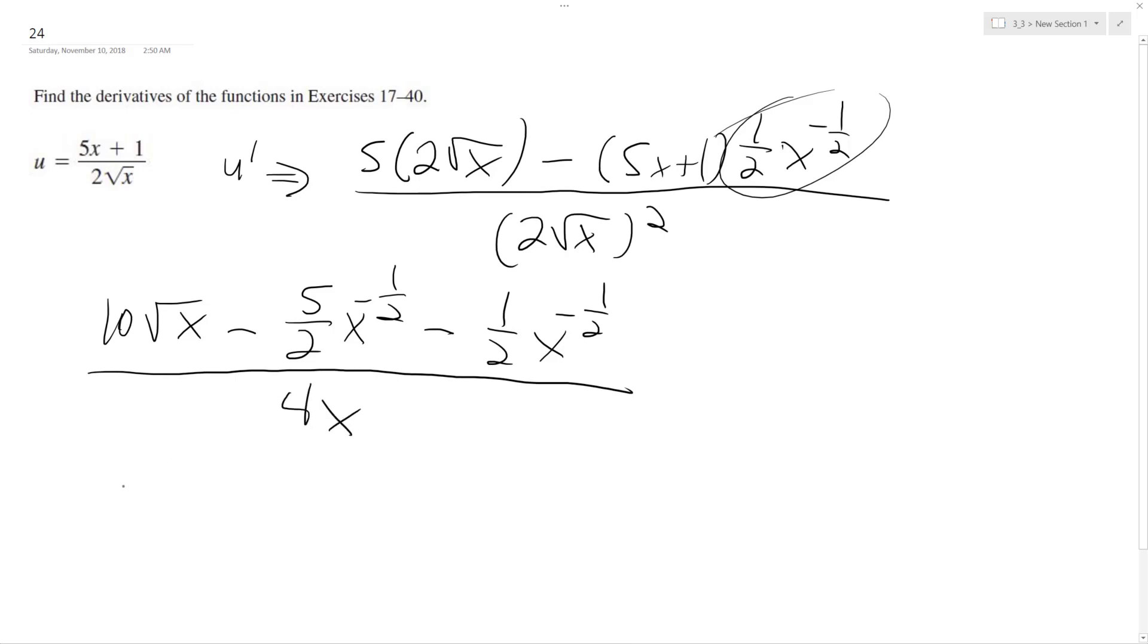So I can rewrite this as, there's a bunch of different ways we can write this. So actually, this goes to 1 half here, x. I made a mistake. This should be x raised to the 1 half. And I'm just going to divide through by 4x now.